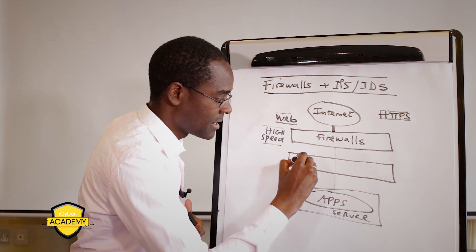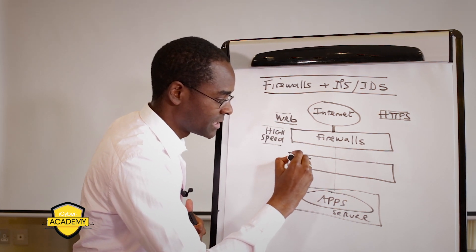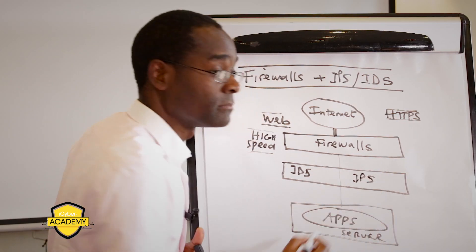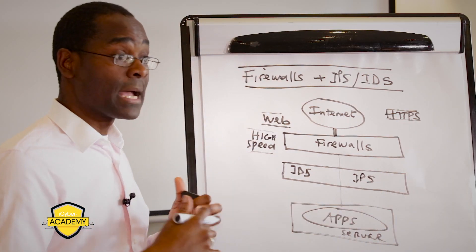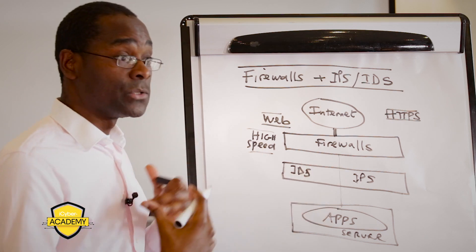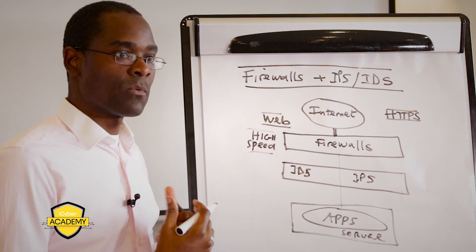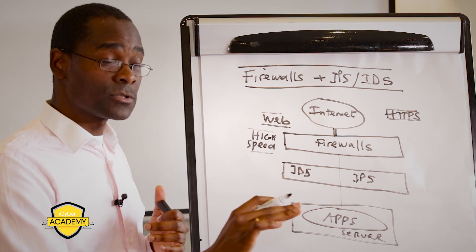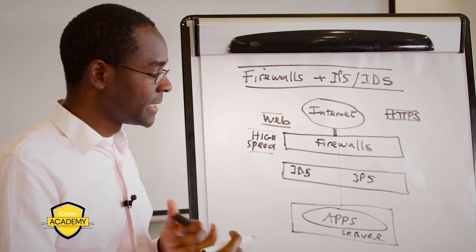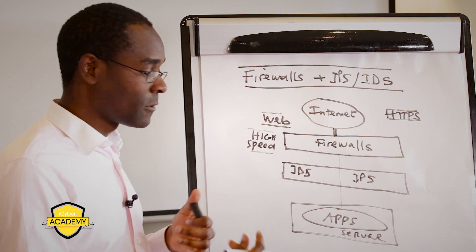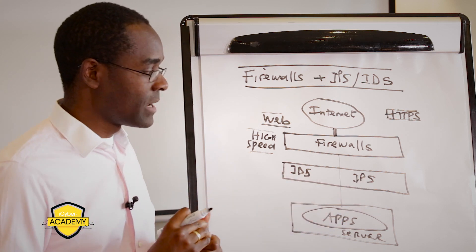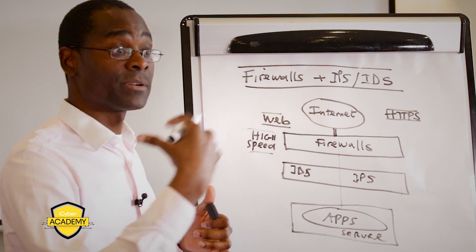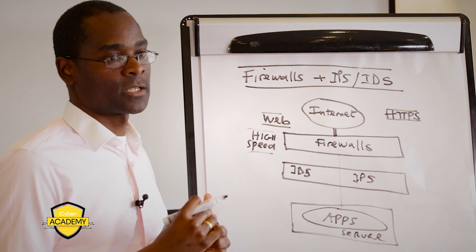IDS is an intrusion detection system and IPS is an intrusion prevention system. The difference is: one can only alert, where the other can actually do something about it by stopping the traffic if an attack is going on. The IDS is very passive — it will tell you something is happening but won't have the means to stop it. The IPS, on the other hand, will see something happening and can trigger an event that stops that transaction from going through.